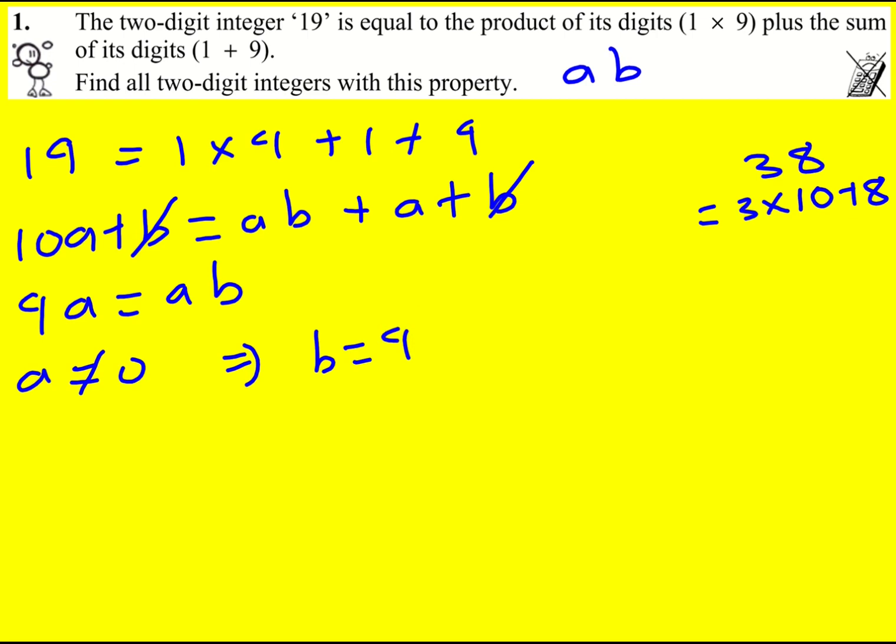Actually A can be any number. So it's going to be 19, 29, 39, all the way up to 99.